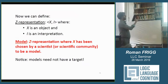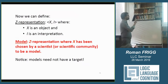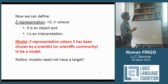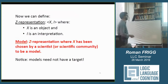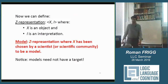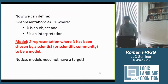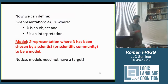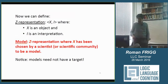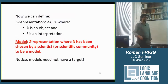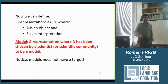With this we can give a Z representation definition. A Z representation is an ordered pair of the object X and the interpretation I imposed onto the object. And here is my minimal definition of what a model is: a model is simply a Z representation where X has been chosen by a scientist or scientific community to be a model.